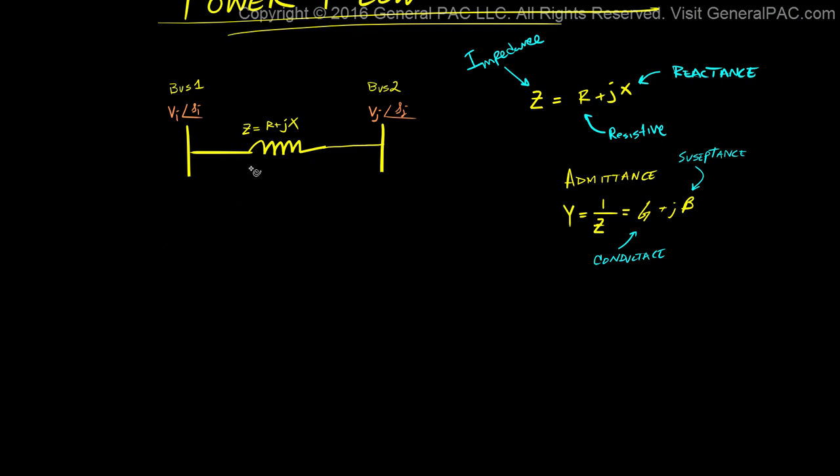Now if we want to determine the current that's flowing from bus 1 to bus 2, how would we do it? Now the simplest way to think about it is current is equal to the voltage drop between bus 1 and bus 2. So we'll say that we have the voltage of bus 1, which is vi at some angle i, minus the voltage on bus 2, which is vj at angle j.